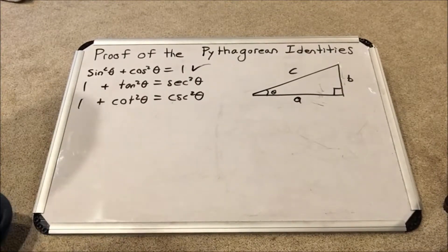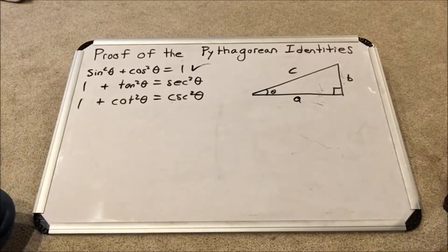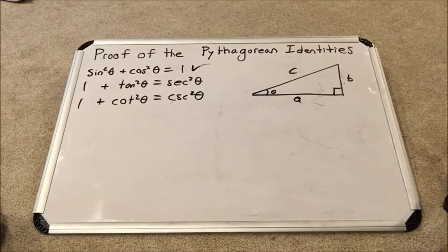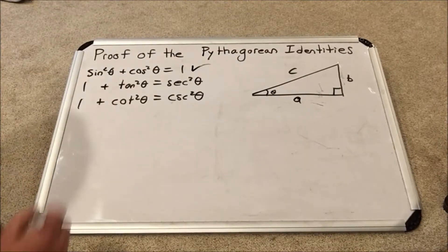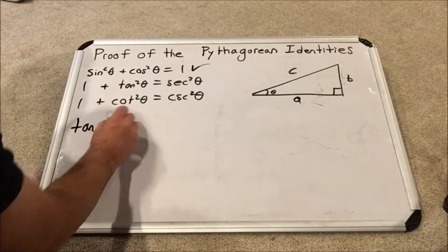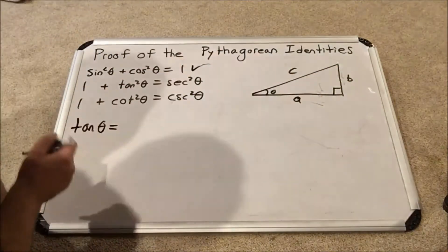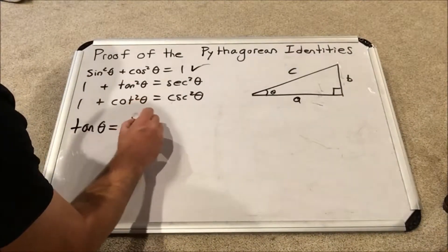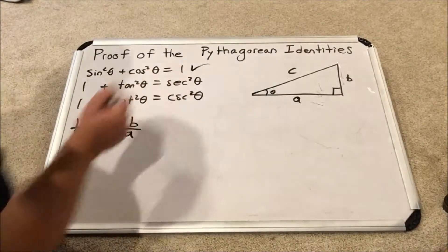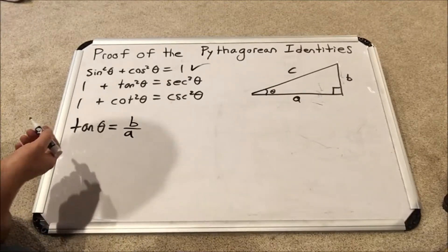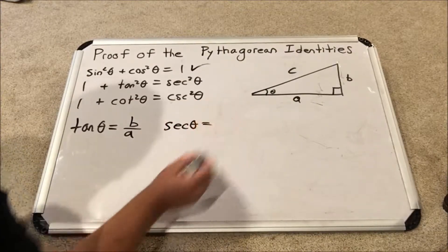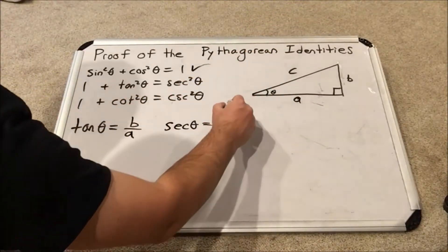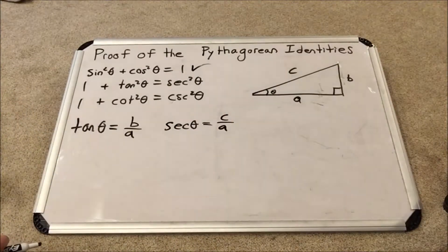Now for the second one: 1 plus tangent squared theta equals secant squared theta. I'm going to write the expressions for tangent theta and secant theta. Tangent theta equals opposite over adjacent, so b over a. Secant theta equals the reciprocal of cosine — that is how secant is defined — so it is hypotenuse over adjacent, which is c over a, the reciprocal of a over c.